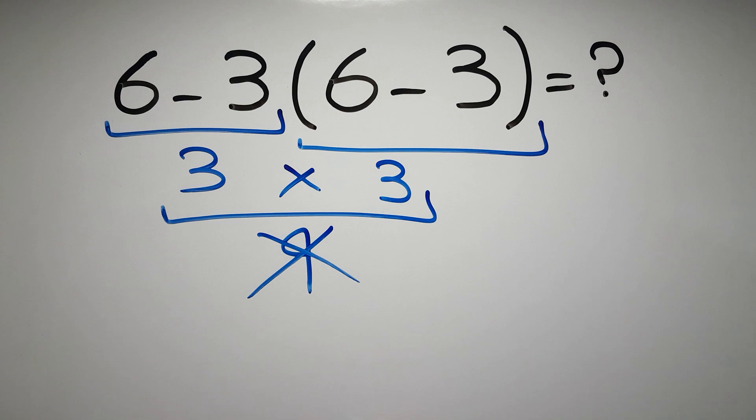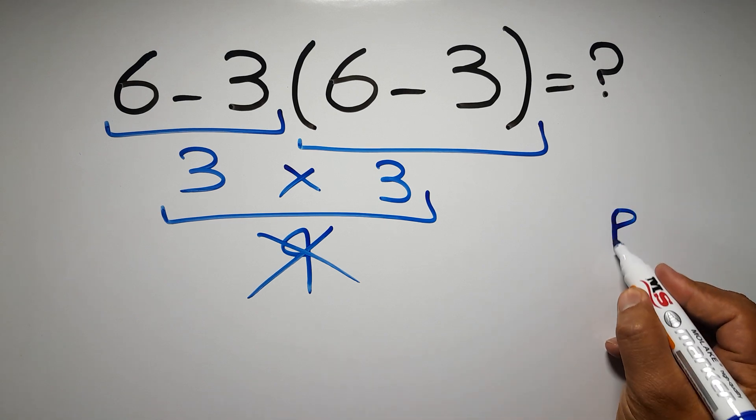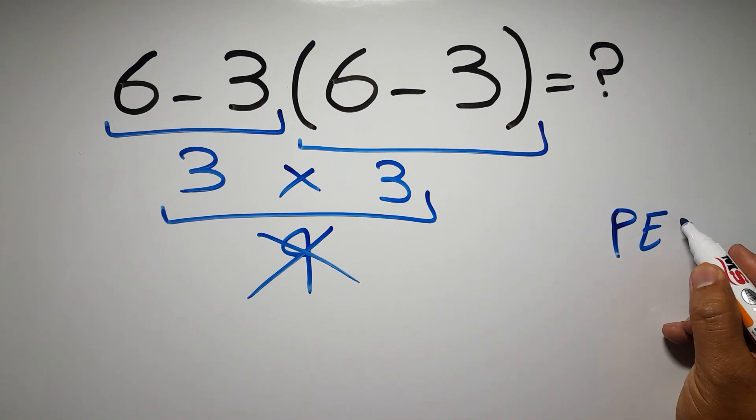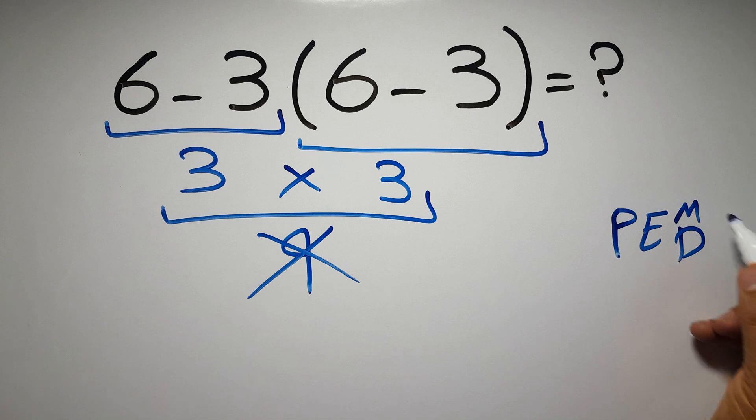because according to the order of operations, first we have to do parentheses, then exponents, then multiplication or division, and finally addition or subtraction.